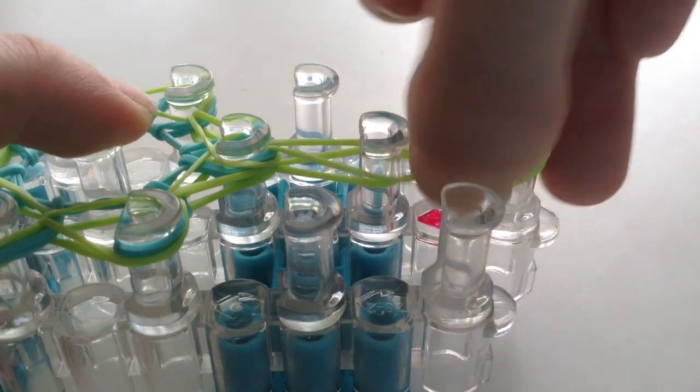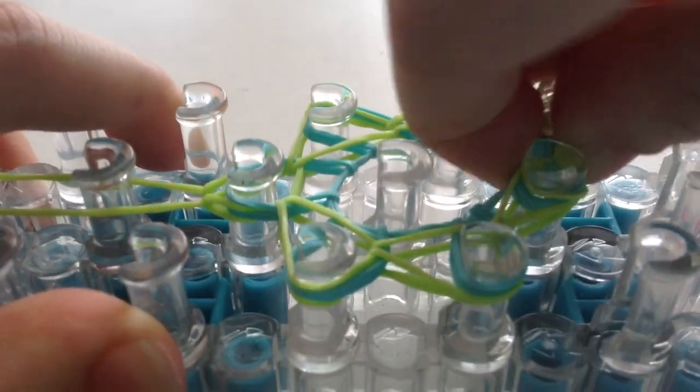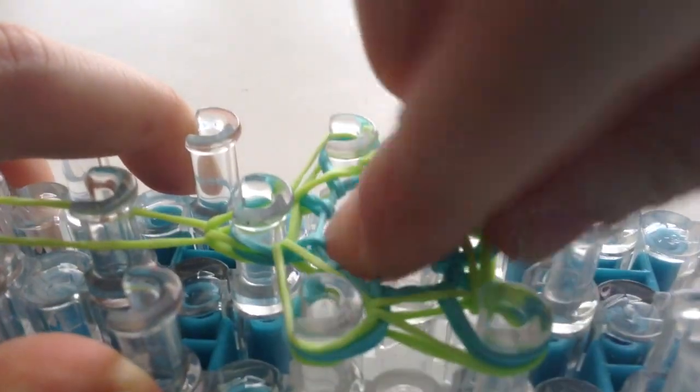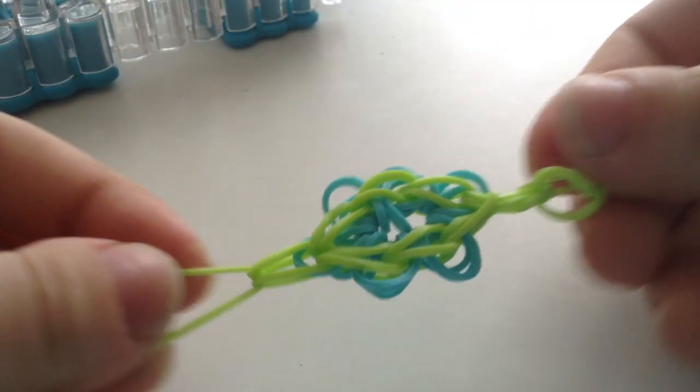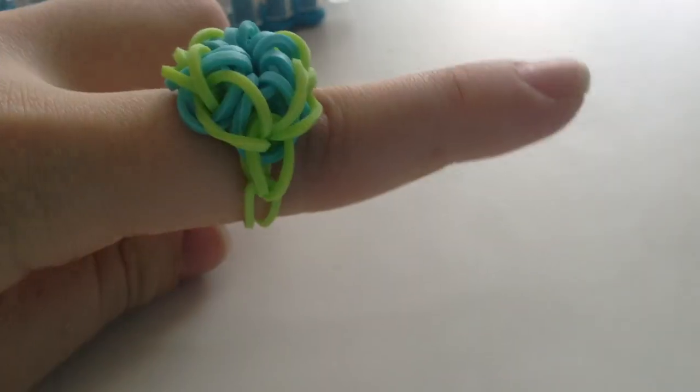Place your c-clip onto the end and you can begin removing it from the loom. And then you'll just want to attach your c-clip to the other end. And that is it. Thanks for watching and also be sure to check the description of this video for more rainbow loom tutorials.